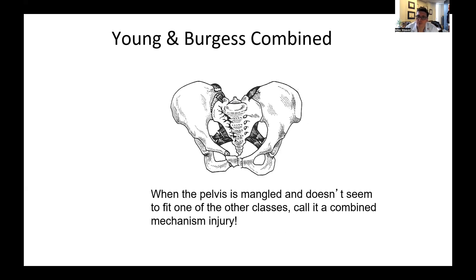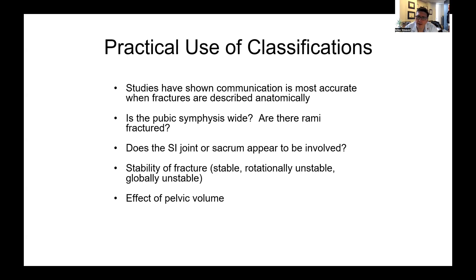Los patrones combinados de Young y Burgess son fracturas destrozadas con mucha interrupción donde es difícil clasificarlas, o puede haber un anillo pélvico combinado con una fractura acetabular. Se han realizado varios estudios sobre el uso de sistemas de clasificación con gran variabilidad; por ello, en vez de depender solo de un sistema, es preferible usar términos descriptivos al referirse a estas lesiones.